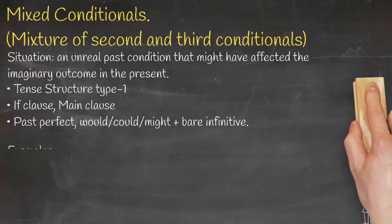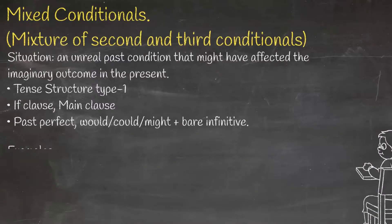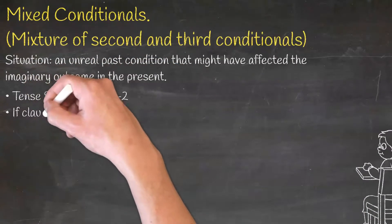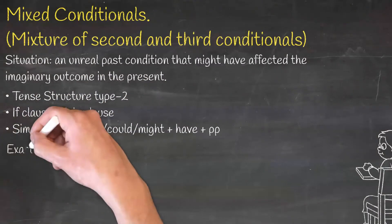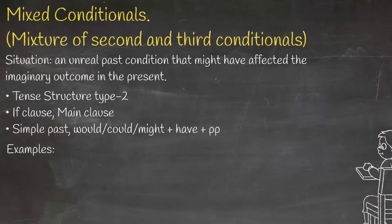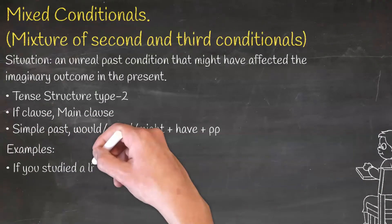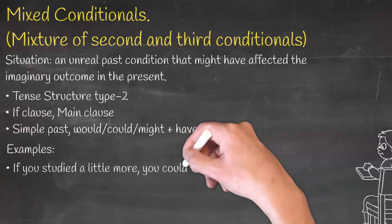On the screen now you can see details of mixed conditional type 2. We construct this by clubbing the if clause of the second conditional with the main clause of the third conditional. Examples: If you studied a little more, you could have passed.